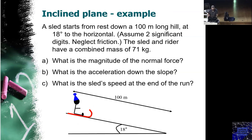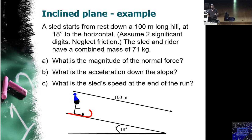Let's do this example: a sled starts from rest down a 100-meter long hill at 18 degrees to the horizontal. Neglect friction; the sled and rider have a combined mass of 71 kilograms. Find the normal force, the acceleration down the slope, and the sled's speed at the end. This is an ideal problem with zero friction and only gravitational force — exactly what we explained.